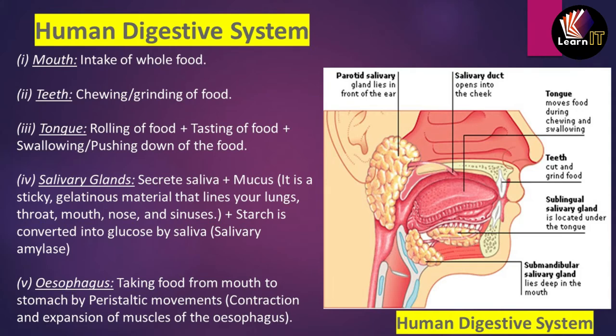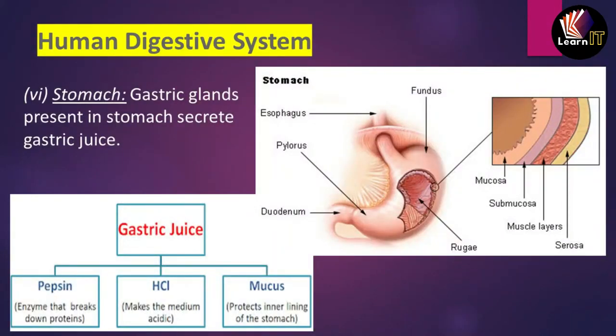The esophagus takes food from the mouth to the stomach with the help of peristaltic movement. Peristalsis is a type of wave movement inside the esophagus — the contraction and expansion of the muscles of the esophagus — by which food is moved down toward the stomach.